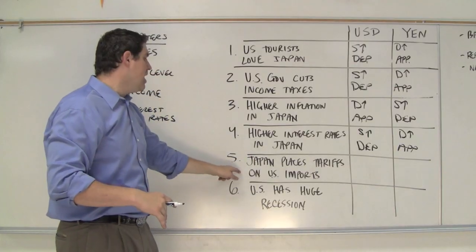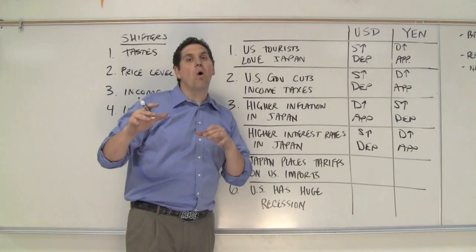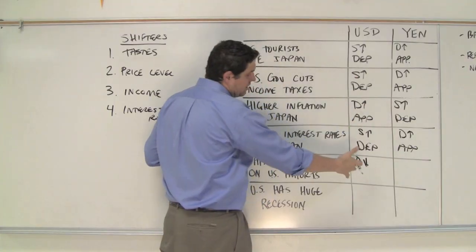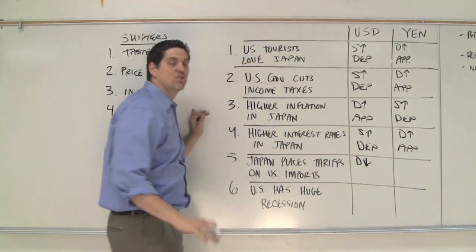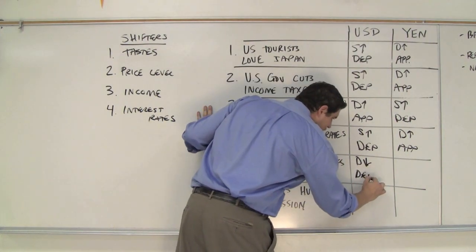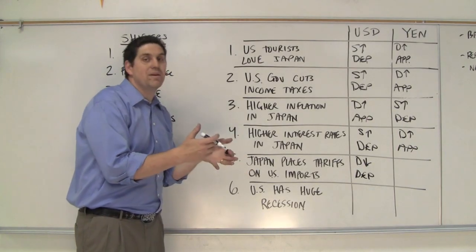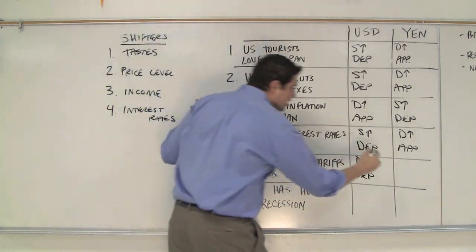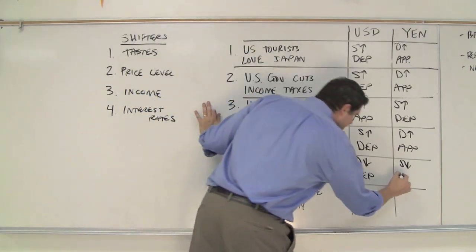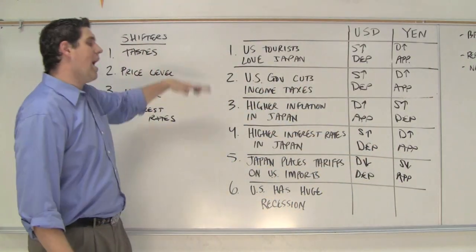Now pay attention to this one. If Japan places high tariffs on U.S. imports, Japanese people are going to want less dollars. The demand is going to fall — this is new for us. Demand is going to fall for U.S. dollars. Japanese people don't want U.S. dollars because they don't want to pay these high tariffs, and so that's going to cause the dollar to depreciate. The Japanese used to buy a certain number of dollars, but now they're not buying anymore, and they're supplying less — so the supply falls for Japanese yen in the foreign exchange. That would cause the yen to appreciate, and supply shifting left would cause a higher exchange rate.